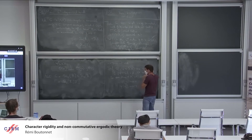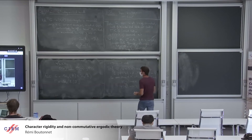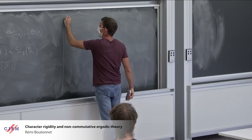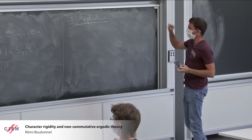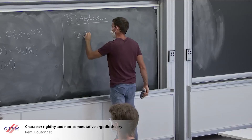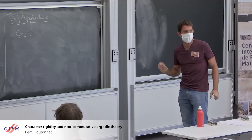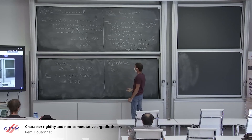Now I'm going to give some more concrete conclusions that you can derive out of this theorem. This is the theorem we will prove this week, and now I'm just deducing things. The first corollary: I will apply the theorem to each of the three dynamical systems I described. In the case where A is a commutative C*-algebra, you get a statement about actions on spaces.